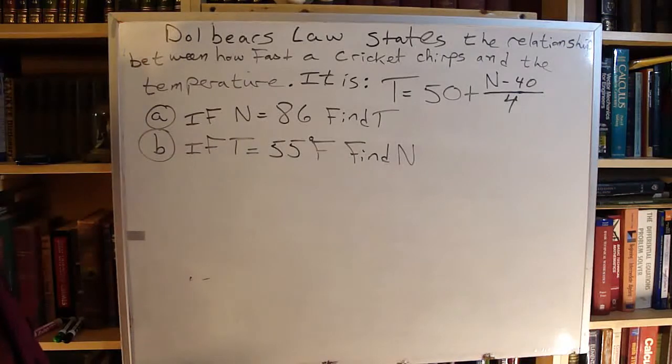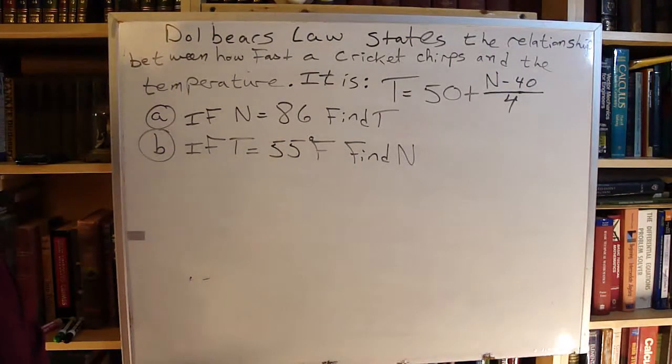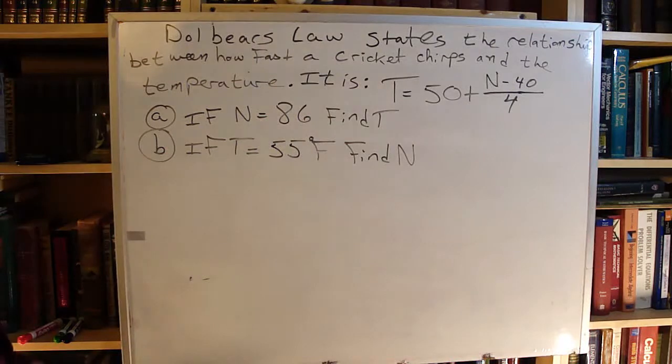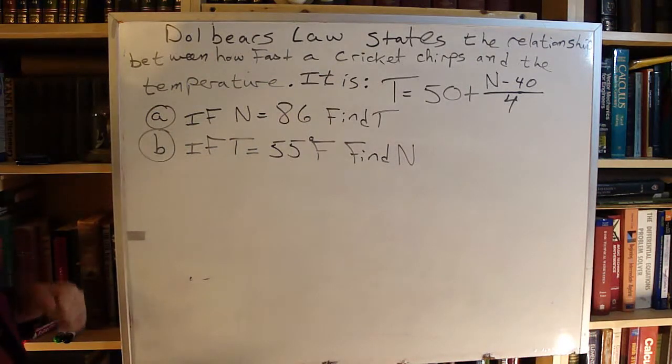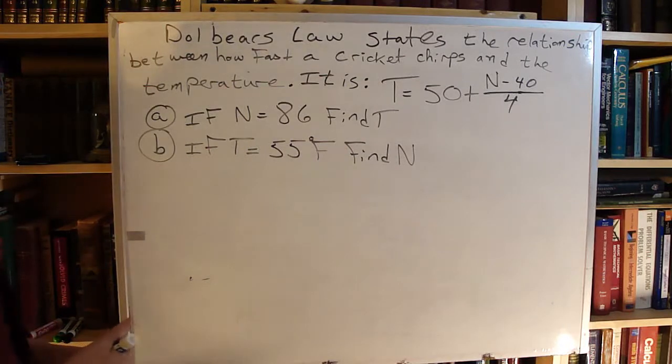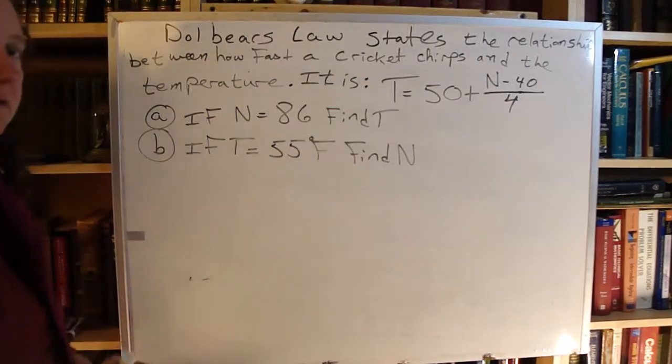Dolbert's Law states the relationship between how fast a cricket chirps and the temperature. It is T equals 50 plus the difference of N and 40 divided by 4. If N equals 86, find T. And then going the other way, if T is 55, find N.